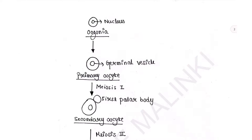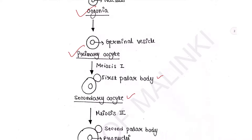Now we will see the diagram to understand it in a better way. Here we can see this is the oogonia, or gamete mother cell. Now it is going to start meiosis, so at that moment it is termed as primary oocyte. The nucleus of the primary oocyte is called germinal vesicle. It undergoes meiosis I and will produce secondary oocyte and first polar body.